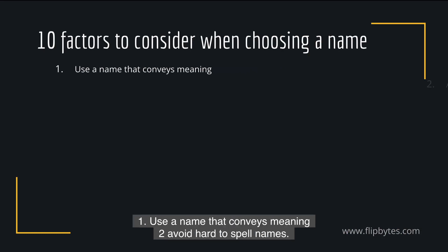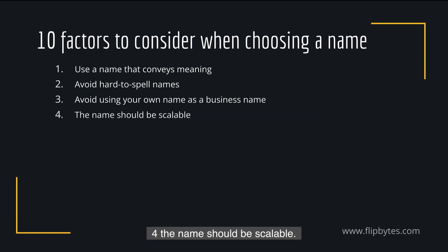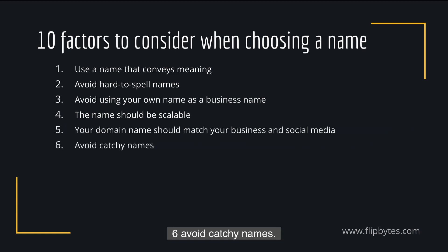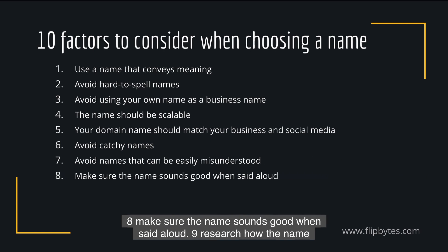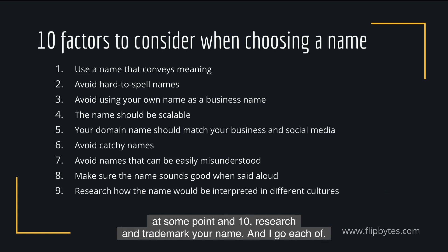One, use a name that conveys meaning. Two, avoid hard to spell names. Three, avoid using your own name as a business name. Four, the name should be scalable. Five, your domain name should match your business name and social media handles. Six, avoid catchy names. Seven, avoid names that can be easily misunderstood. Eight, make sure the name sounds good when said aloud. Nine, research how the name would be interpreted in different cultures if you're planning to go international. And ten, research and trademark your name.